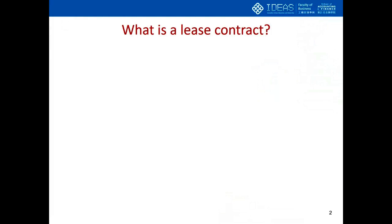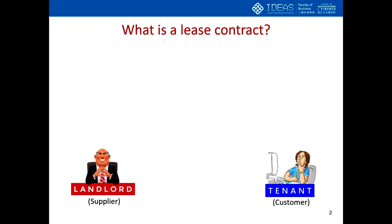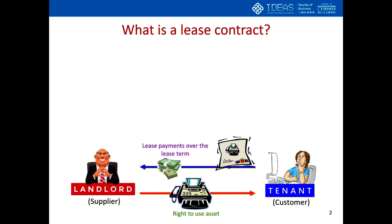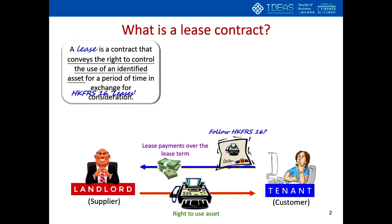So what is a lease contract? A typical rental arrangement is between a supplier/landlord and a customer/tenant, which allows the customer to have the right to use an asset over a specified period of time — the lease term — and in return the customer pays the supplier lease payments over that period. The common question is whether this arrangement follows HKFRS 16, Hong Kong Financial Reporting Standards 16. By the definition of HKFRS 16, a lease is a contract that conveys the right to control the use of an identified asset for a period of time in exchange for consideration.